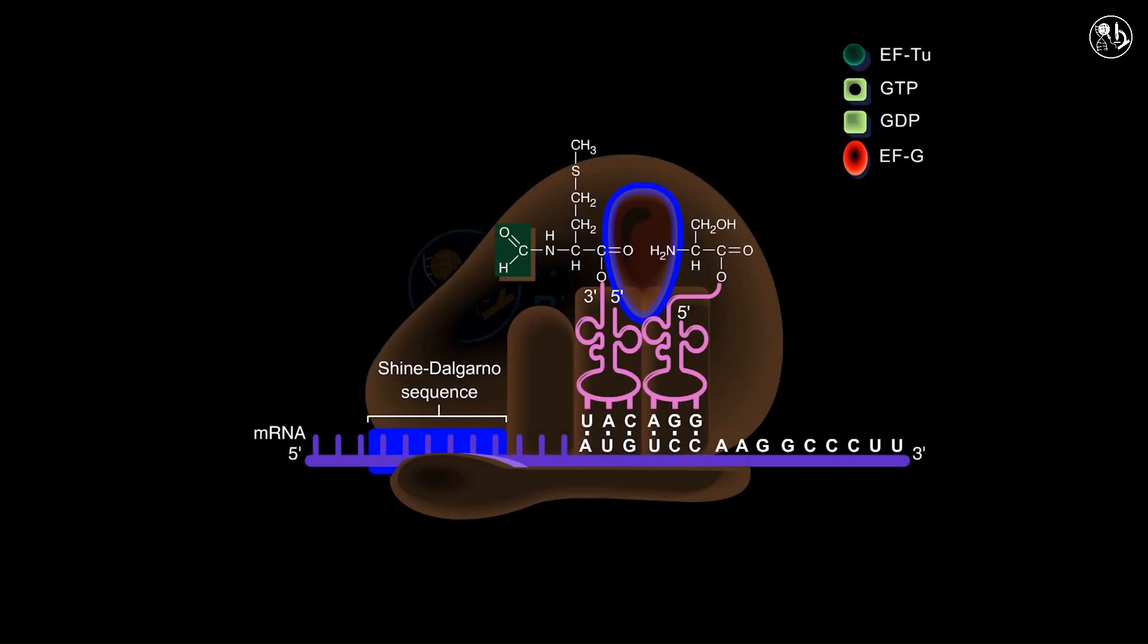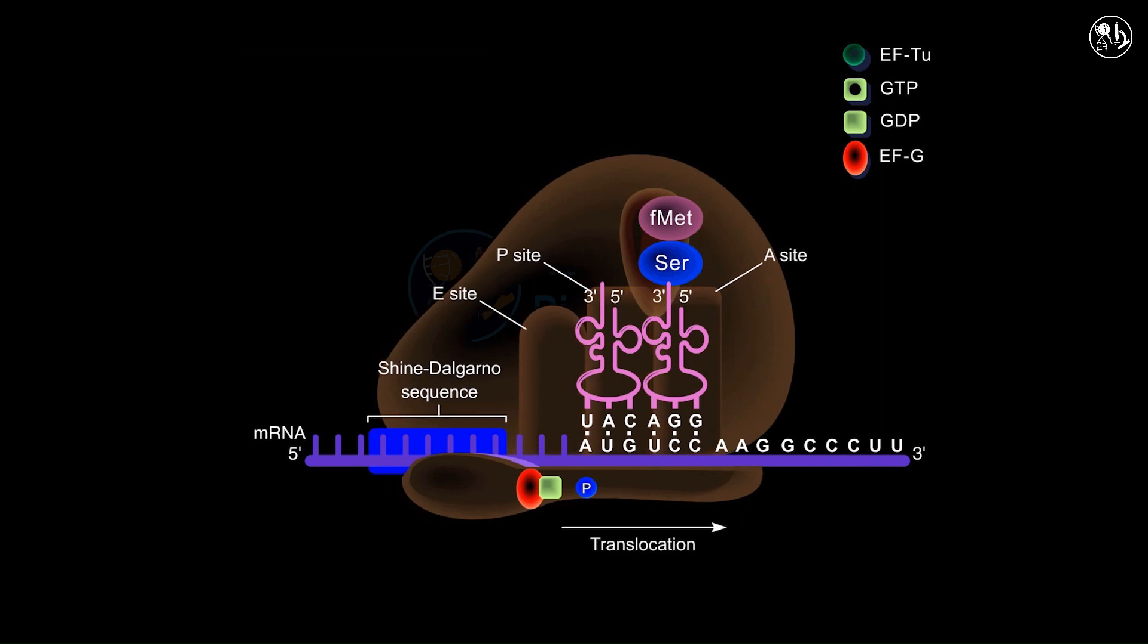The formation of a peptide bond is a condensation reaction which results in the liberation of water. After the peptide bond is formed, the P site contains an uncharged tRNA, while the A site holds a tRNA linked to the nascent polypeptide chain. Assisted by EF-G and another molecule of GTP, the ribosome shifts one codon down the mRNA strand.